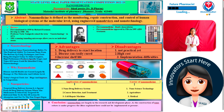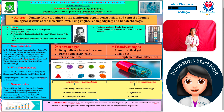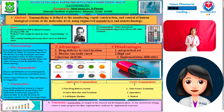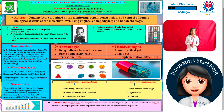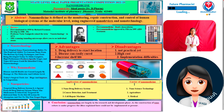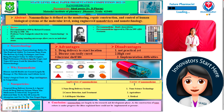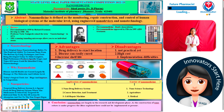Nano is derived from the Greek word 'nanos' meaning drop or small. One nanometer is one billionth. The history of nanomedicine was first mentioned in 1959 by Richard Feynman, and developed in the 1980s to 1990s.